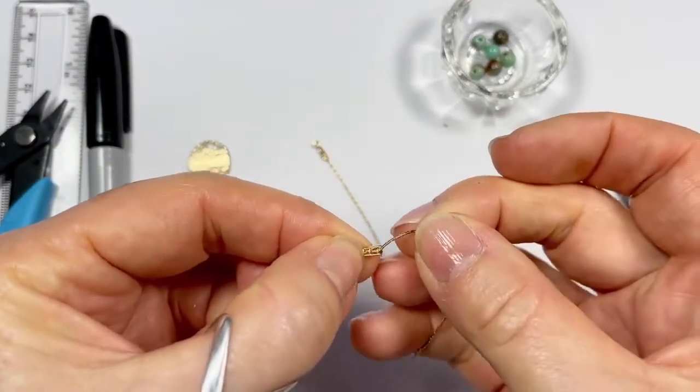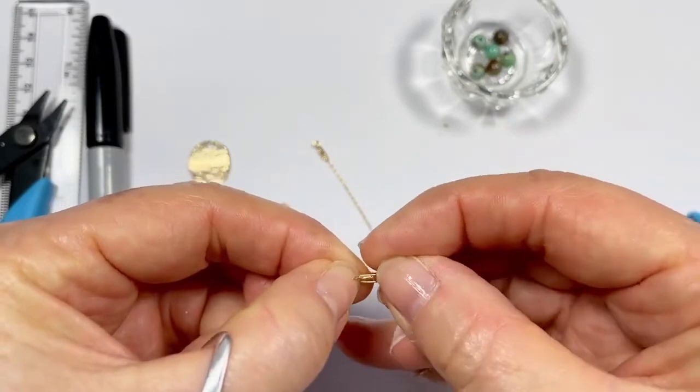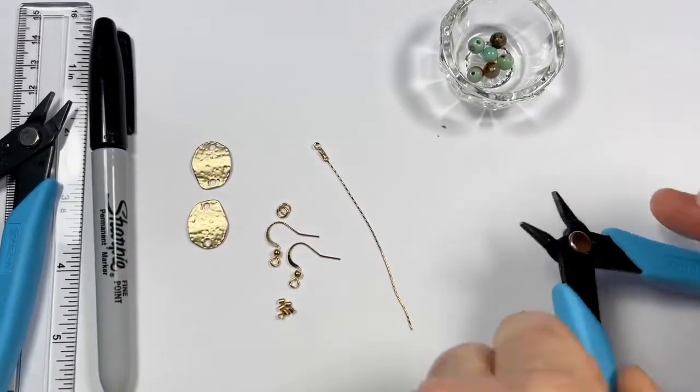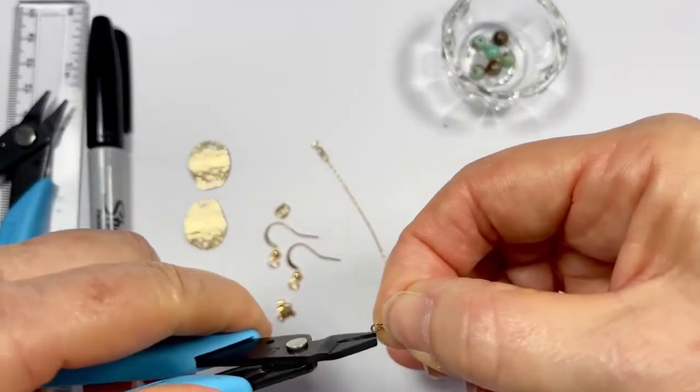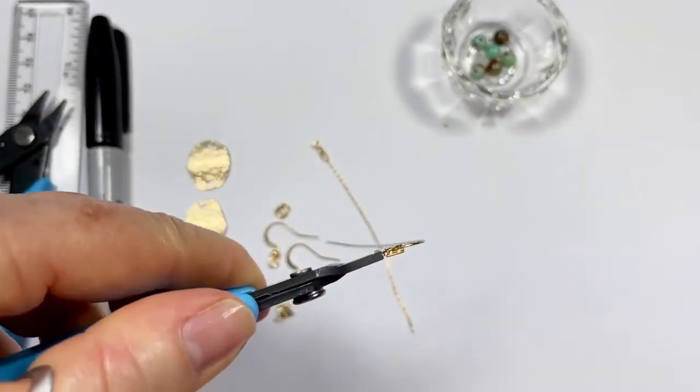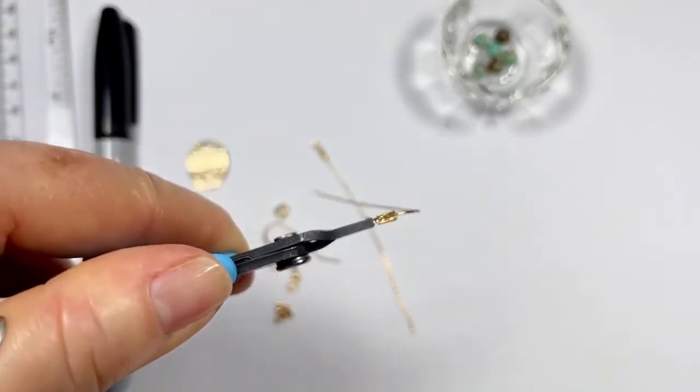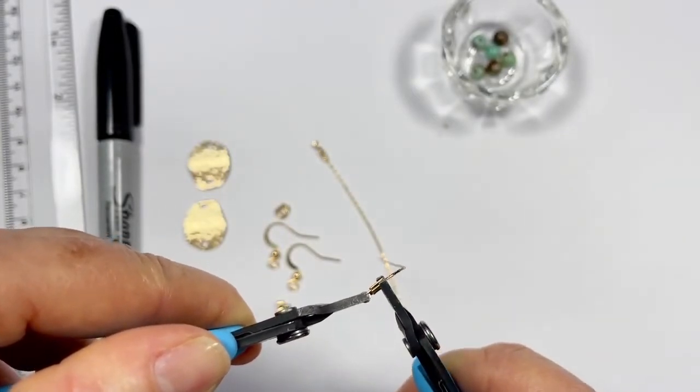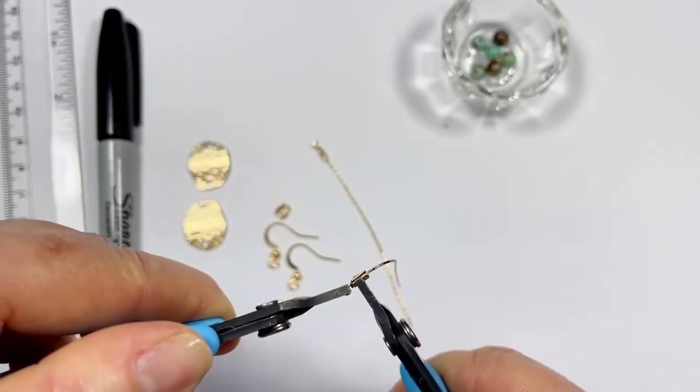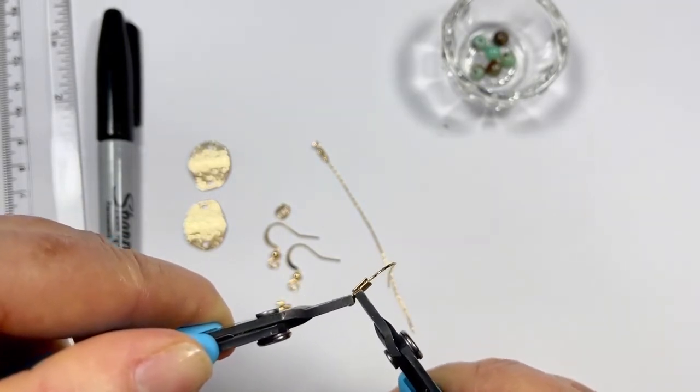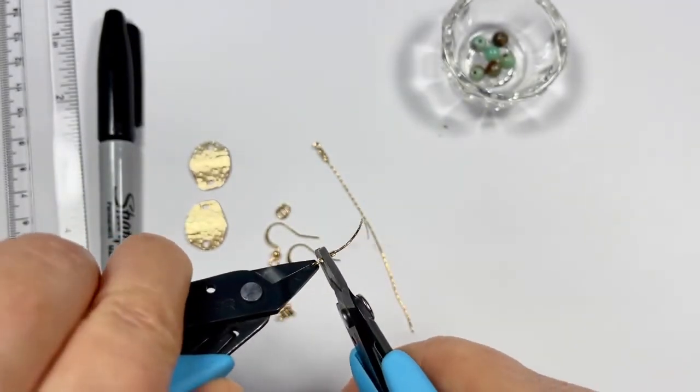We'll pop this back in, just use my pliers to hold it in place. And fold one side down first, just fold it over gently. Make sure it's connected with the beading chain, and just bring the other side over.